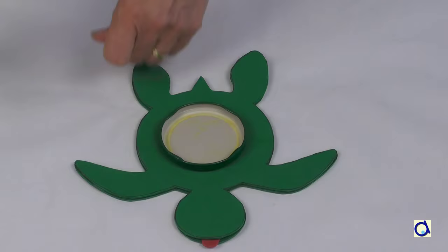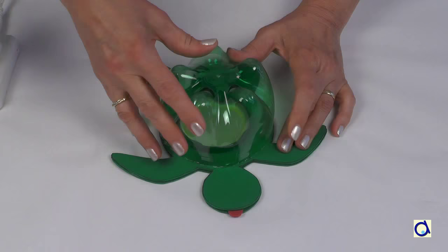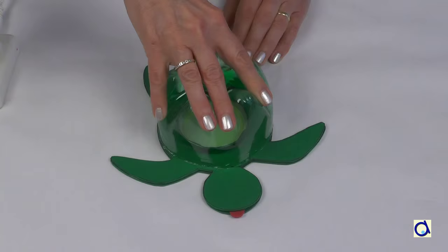Now, glue the shell on the turtle's body with hot glue. Turn the shell so that the opening for the tea light candle is at the back of the turtle. That way it will be less conspicuous. Press in place.